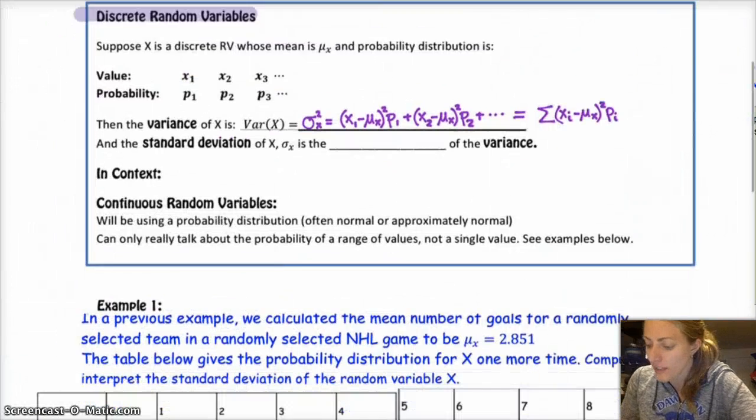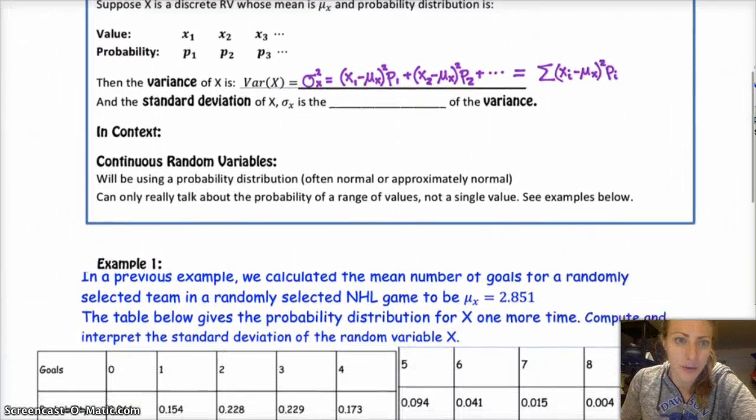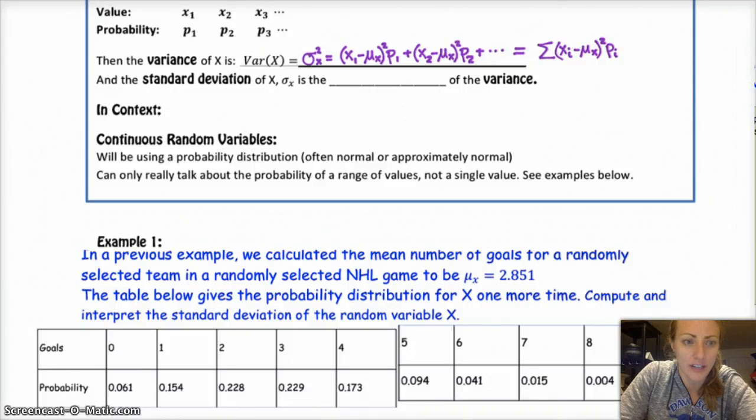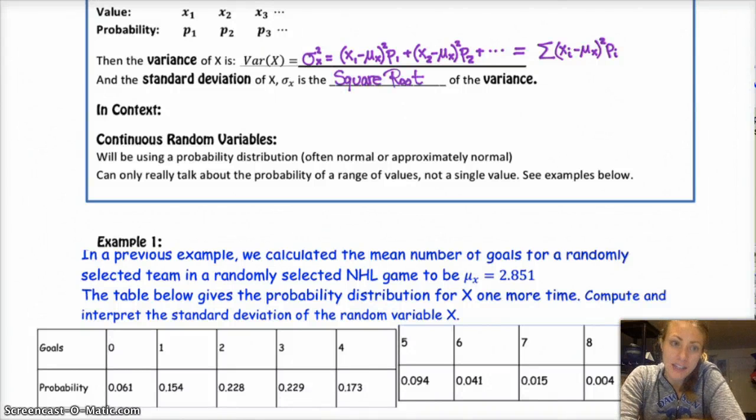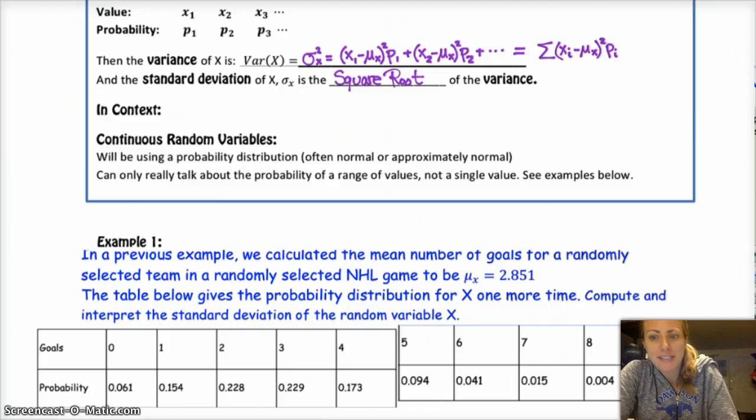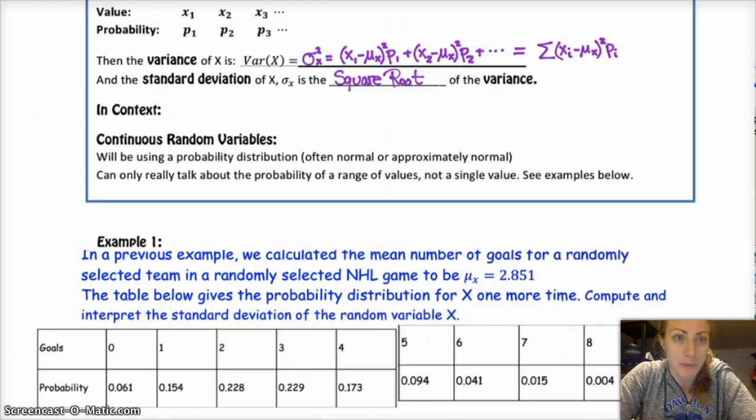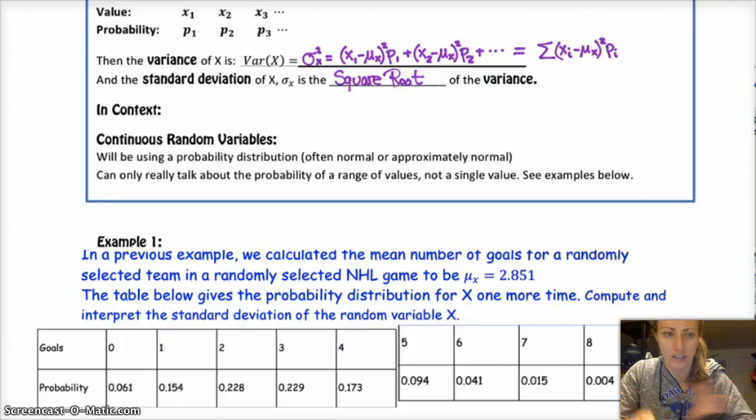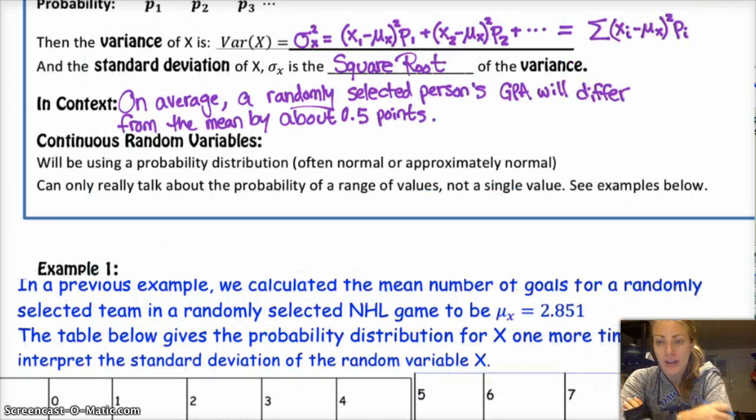And then standard deviation is the same as it's always been, it's just the square root of the variance. And in context, right, a standard deviation, say we're talking about GPAs, you might say something like on average a randomly selected person's GPA will differ from the mean by about 0.5 points or whatever the standard deviation is.